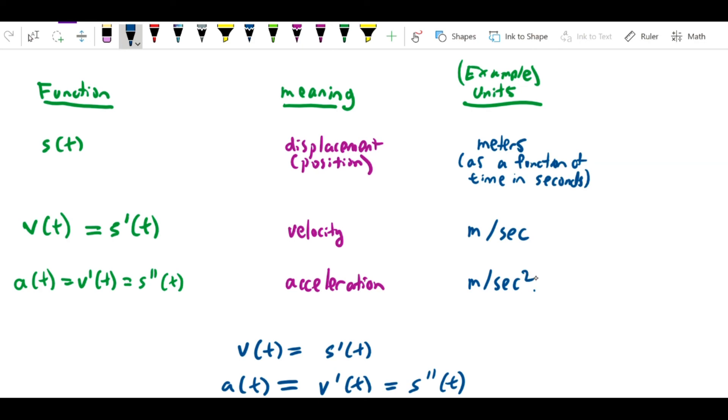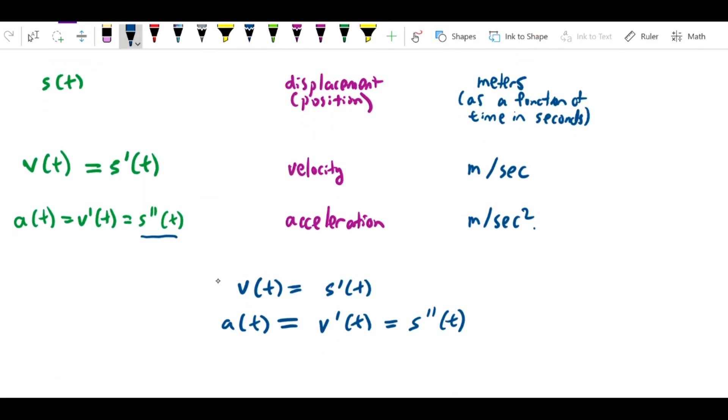And the acceleration, which is the rate at which the velocity is changing, is the derivative of the velocity. Since velocity itself was the derivative of position, that means acceleration is the second derivative of position. This is key to understanding motion relationships in calculus: velocity is the derivative of position, and acceleration is the derivative of velocity or the second derivative of position.